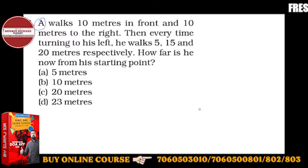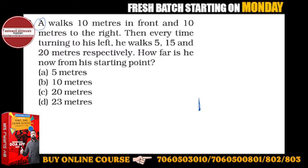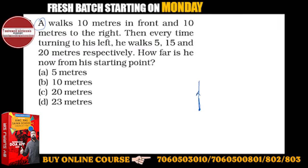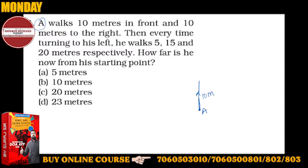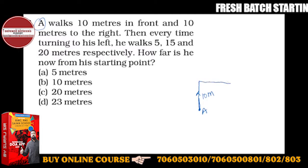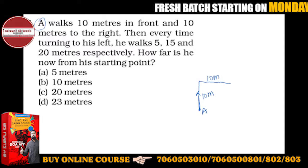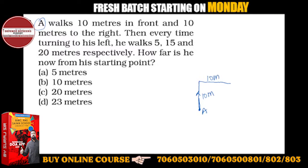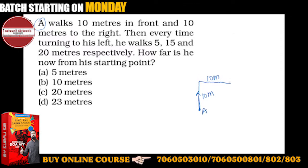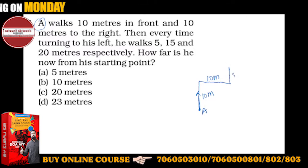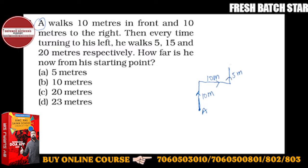So suppose point A is here on the left. 10 meters going to the right, then 10 meters — this is point A — 10 meters up front to the left and 10 meters towards the right. Then every time turning to his left: 5 meters left, then 15 meters left.